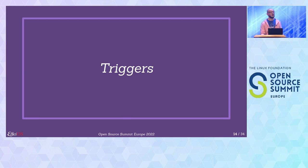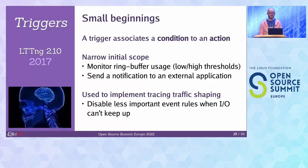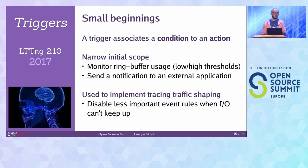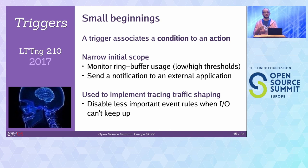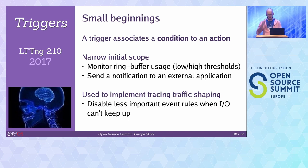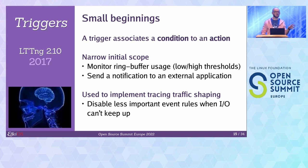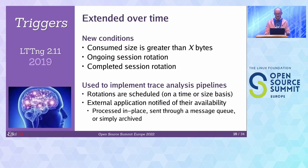So we started to work on triggers. Triggers aren't really a new concept in LTTNG at this point — the first release with triggers was 2.10, released in 2017. A trigger is just a way to associate a condition with an action. Initially the scope was very small — the goal was just to do traffic shaping on trace data. Basically if your buffers are getting fuller faster than you can consume them, you start disabling less important event rules, and when the situation dies down you re-enable them selectively, automated by a monitoring application.